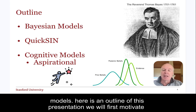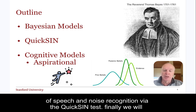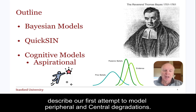Here is an outline of this presentation. We will first motivate and introduce Bayesian modeling. Second, we apply these ideas to a simple model of speech and noise recognition via the QuickSyn test. Finally, we will describe our first attempt to model peripheral and central degradations.